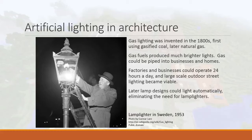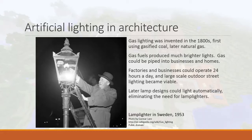Gas lighting was invented in the 1800s, first using gasified coal, then later natural gas. Gas lighting was a huge improvement from oil lamps and candles because it burned more efficiently and could produce much brighter lights. Gas could also be piped into businesses and homes. With the invention of gas lighting, for the first time, factories and businesses could operate 24 hours a day because these lights were actually bright enough to work under — whereas with candles you couldn't really read or do intricate work.